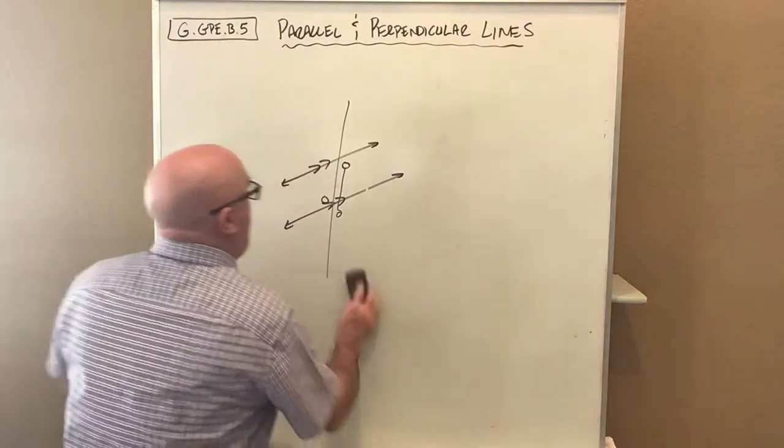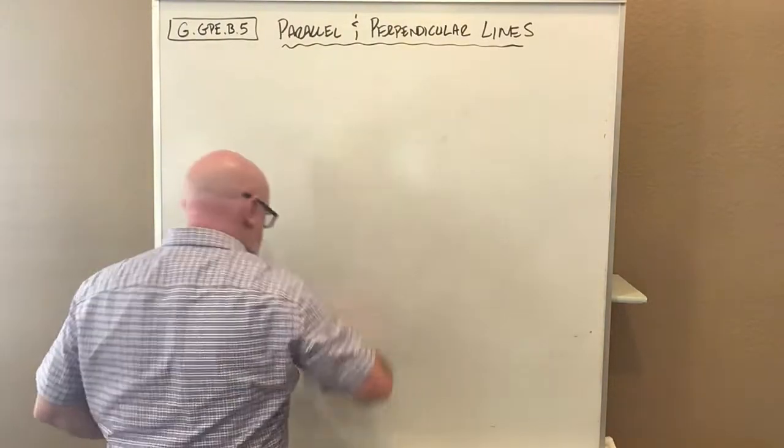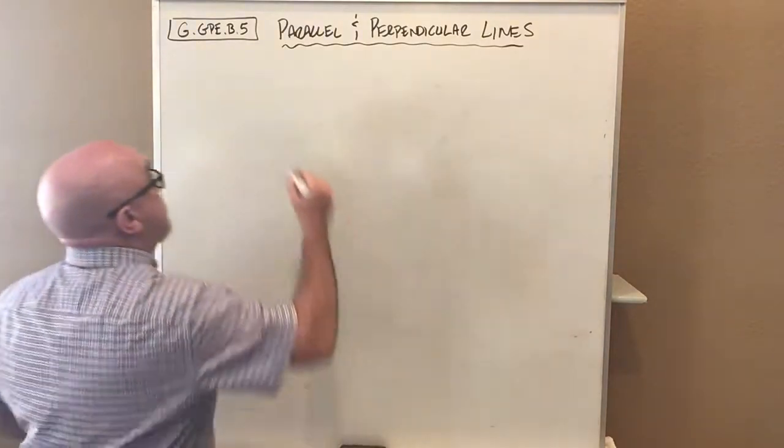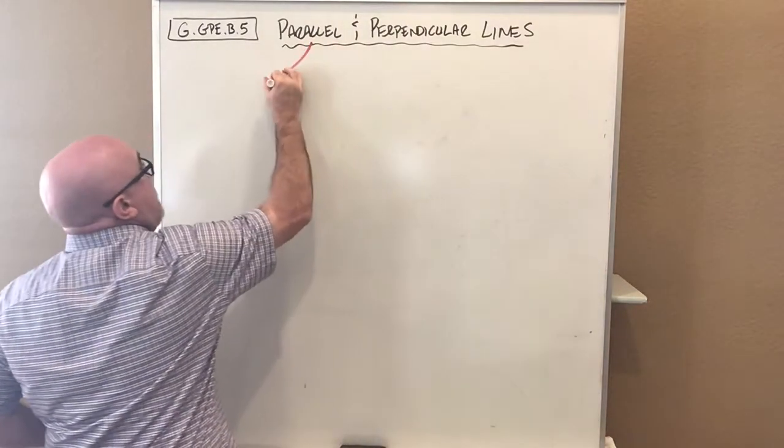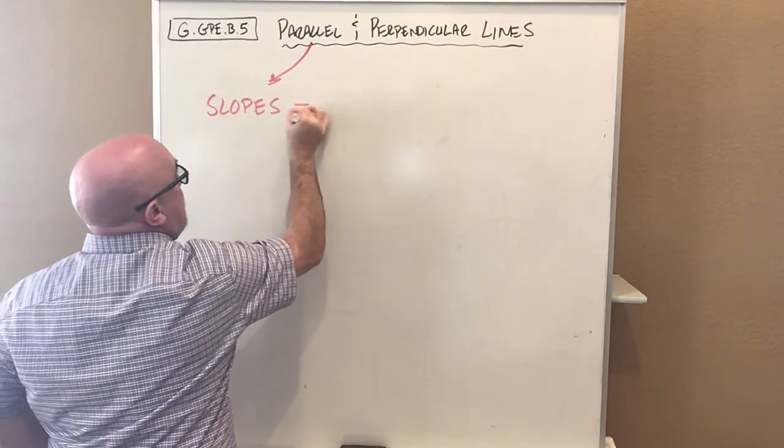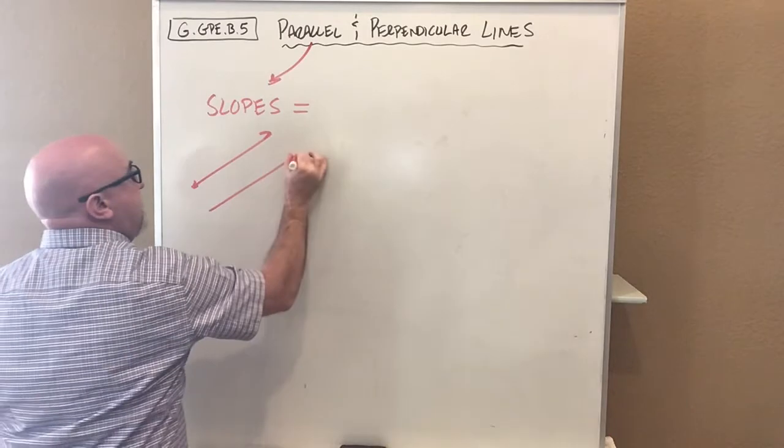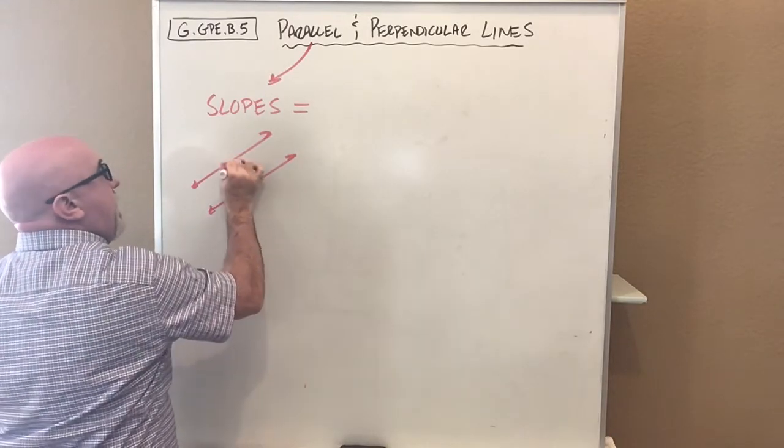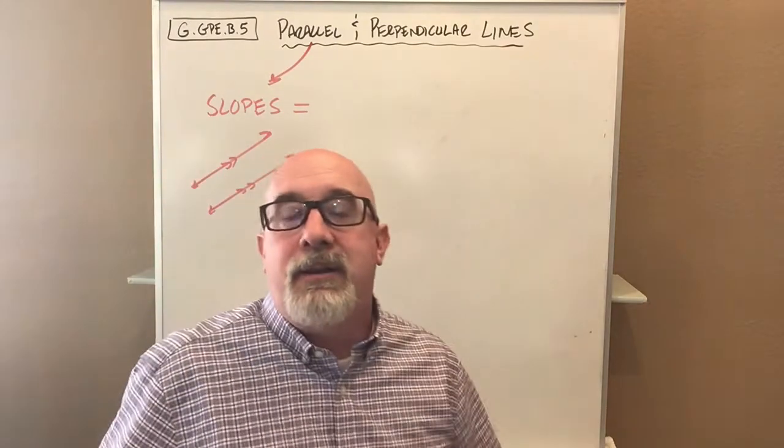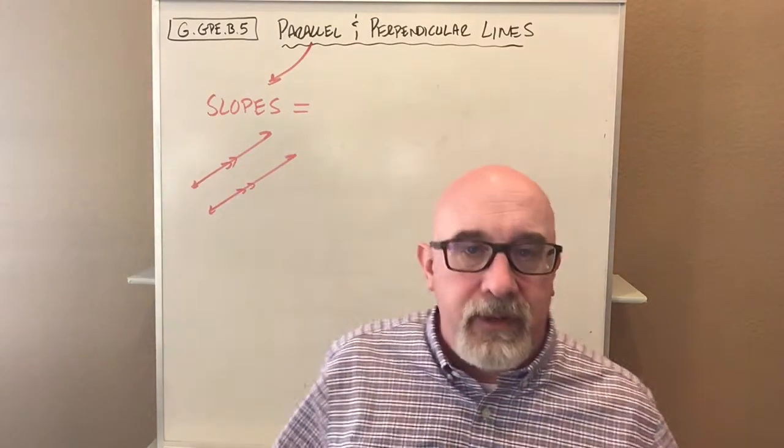What we're going to bring with us from our knowledge about parallel lines is that if you have parallel lines, the slopes are equal. If you have this line and this line, they are parallel because their slopes are the same. That is a very important thing.